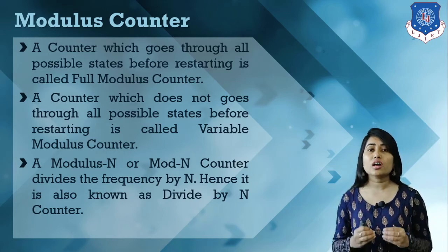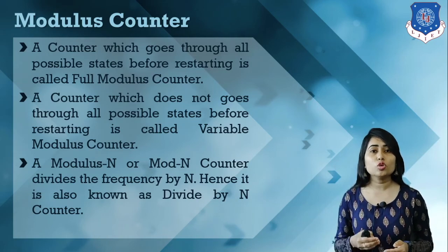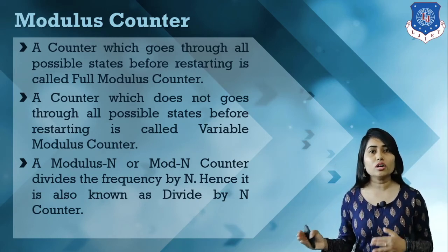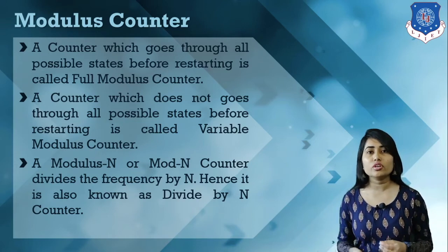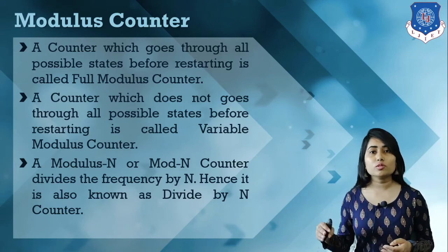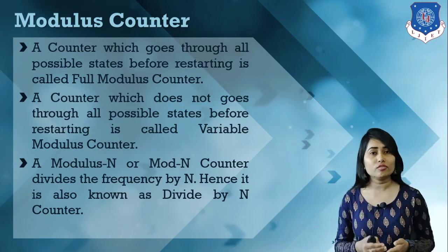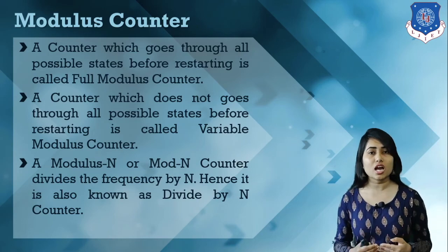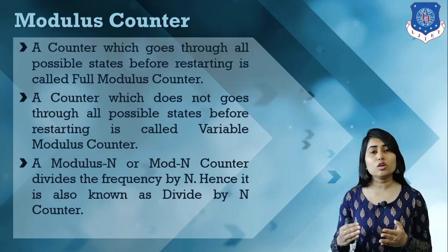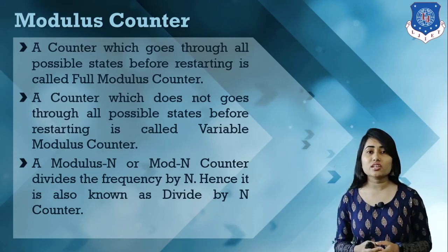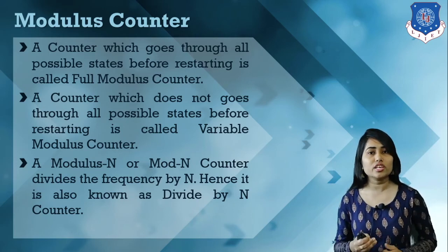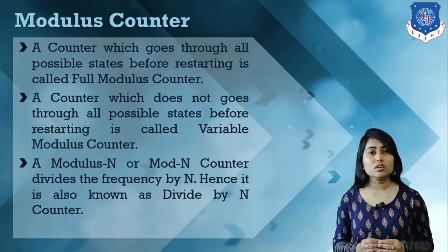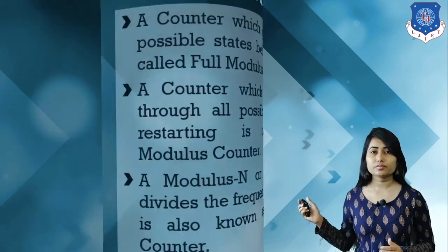To summarize: a counter is basically a group of flip-flops connected such that it counts the pulses applied to it. We have an asynchronous counter in which flip-flops activate one by one, a synchronous counter in which all flip-flops work simultaneously, an up counter, a down counter, an up-and-down counter, and a modulus counter. These are the counters and their classifications. Thank you.